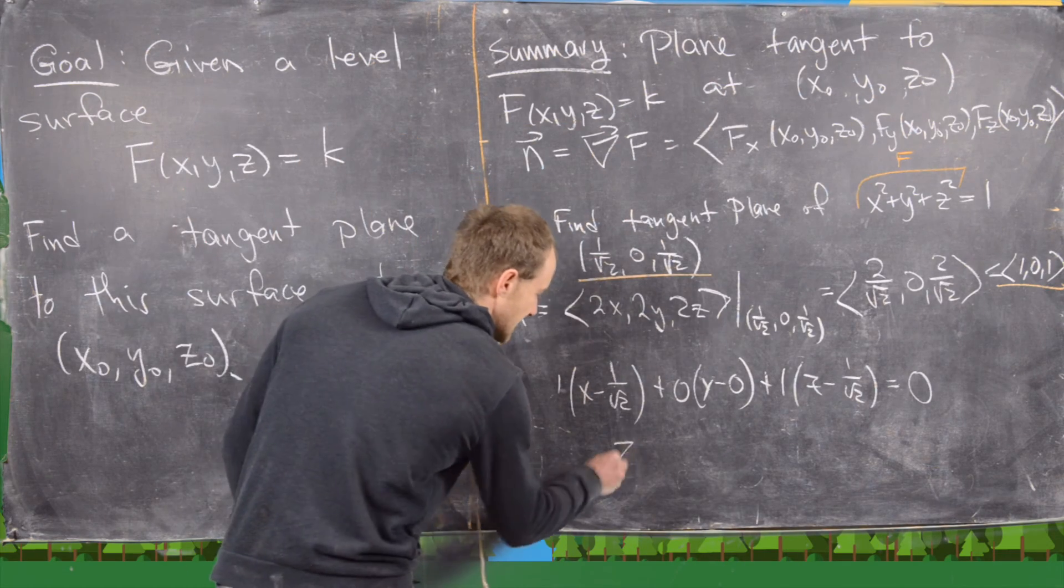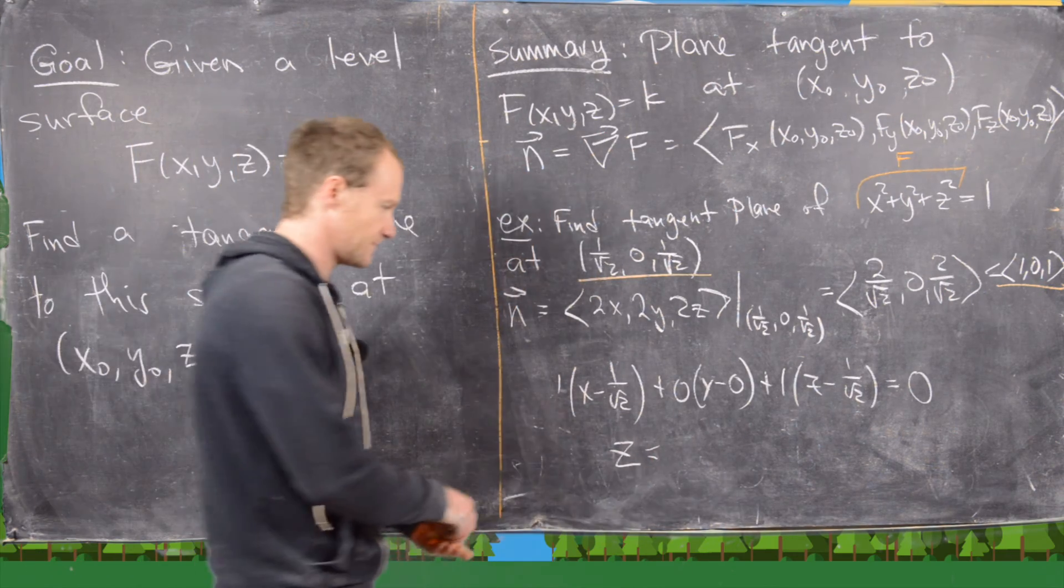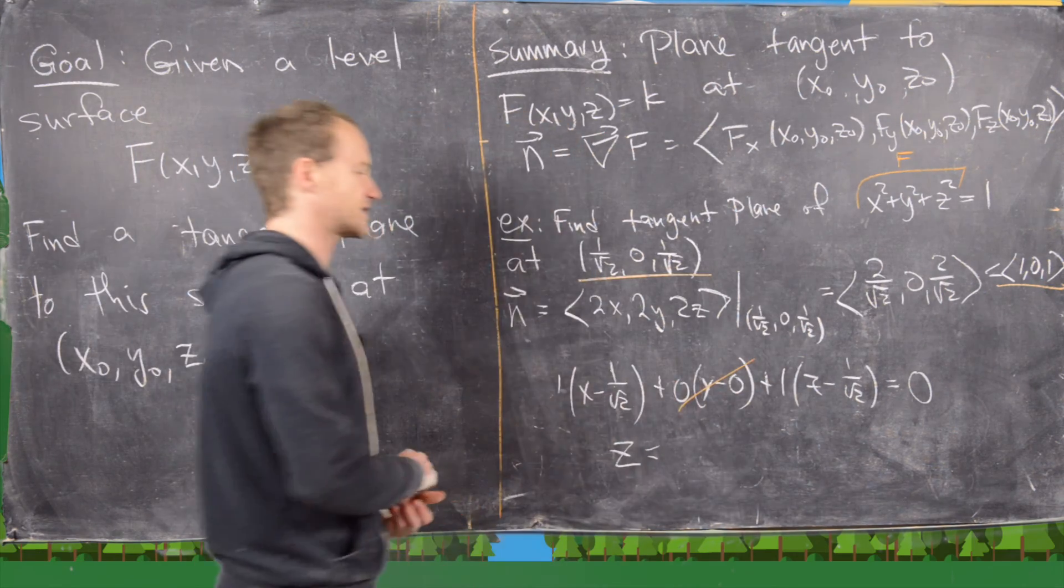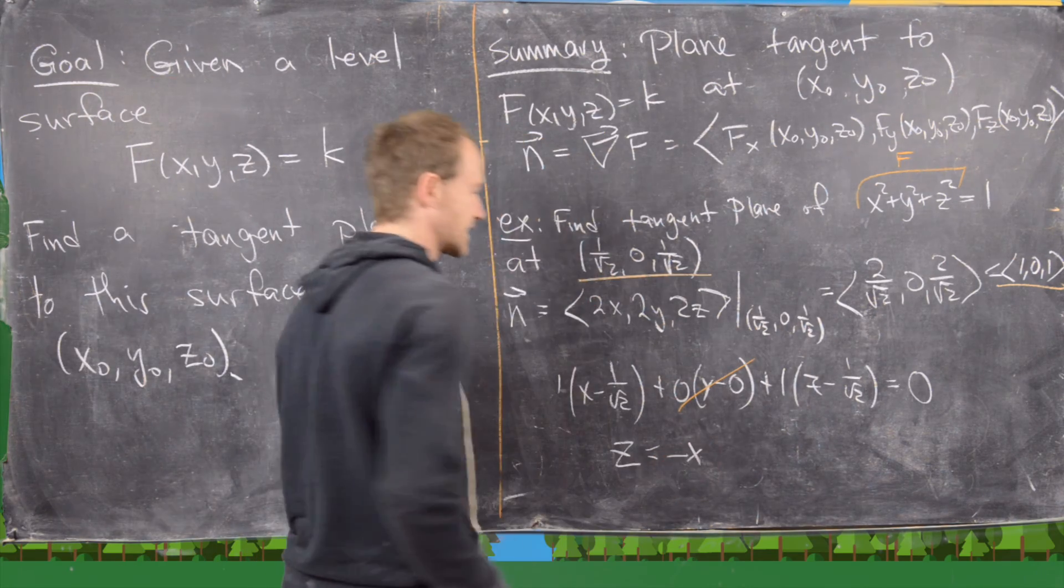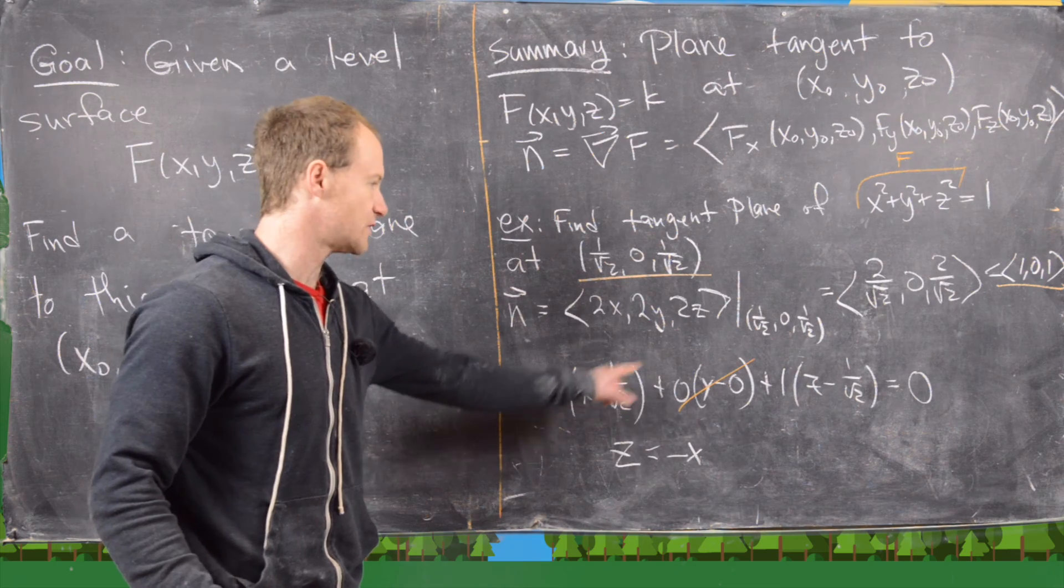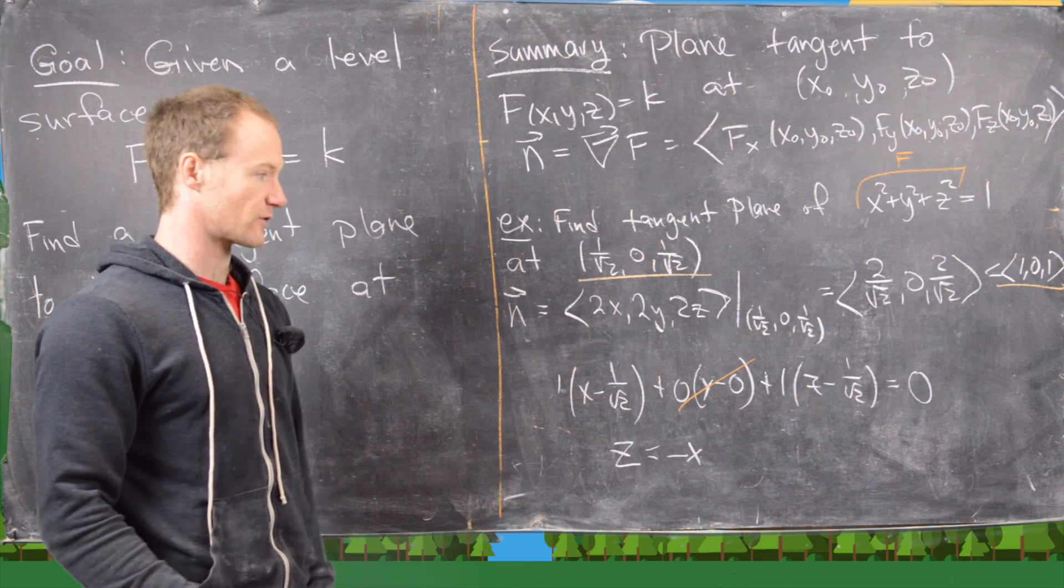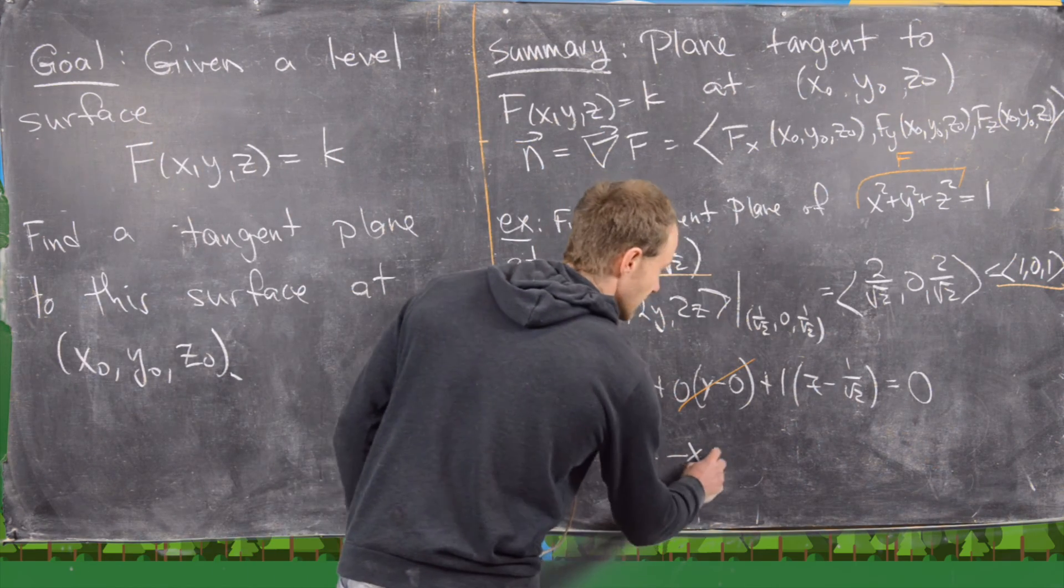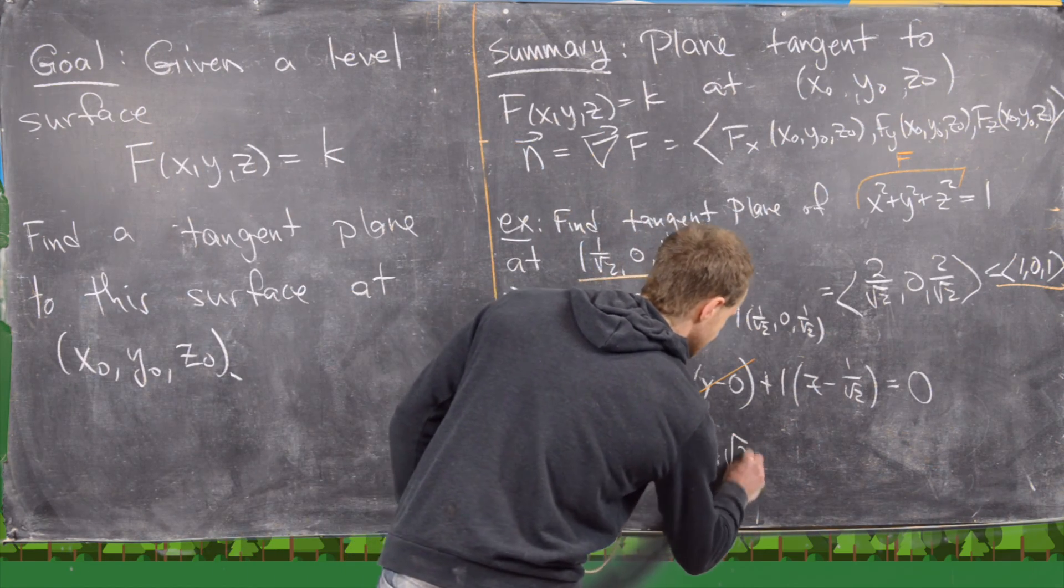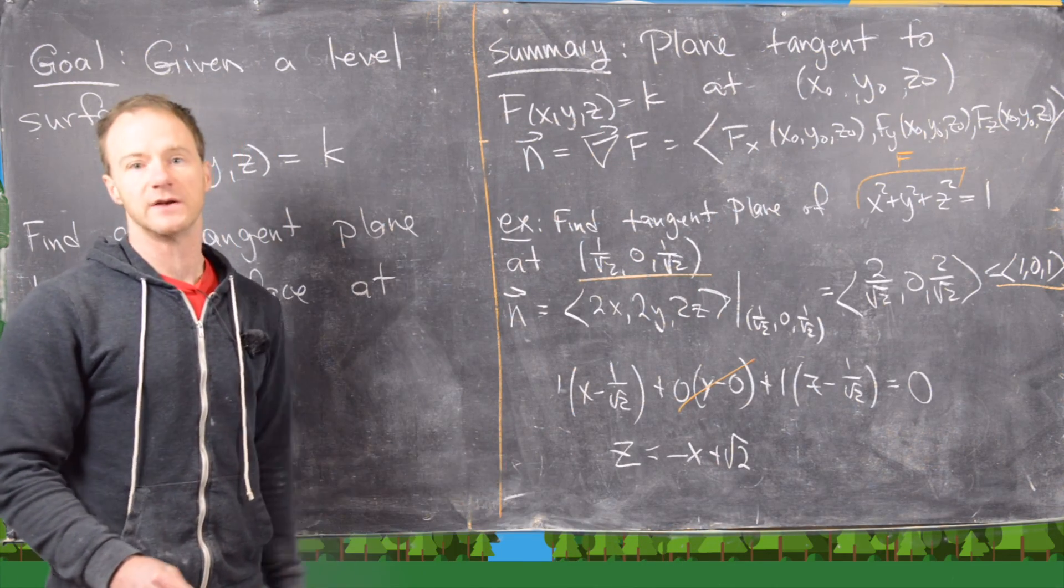Now we can easily solve that for z, and let's see what we get. So this part's going to cancel, and then we can move the x over, we'll get negative x. And now notice that these two are going to add up, we'll get 2 over root 2, but 2 over root 2 is just root 2 in the numerator, and then those will be positive on this side. So I believe we will get z equals negative x plus root 2 as the equation of the plane. So I think this is a good place to stop.